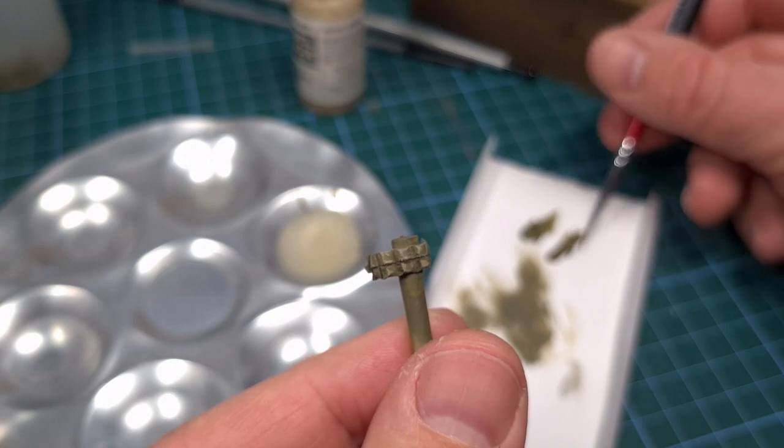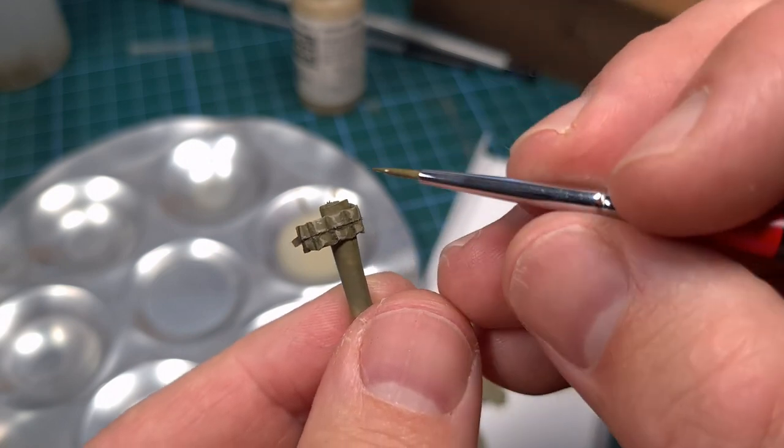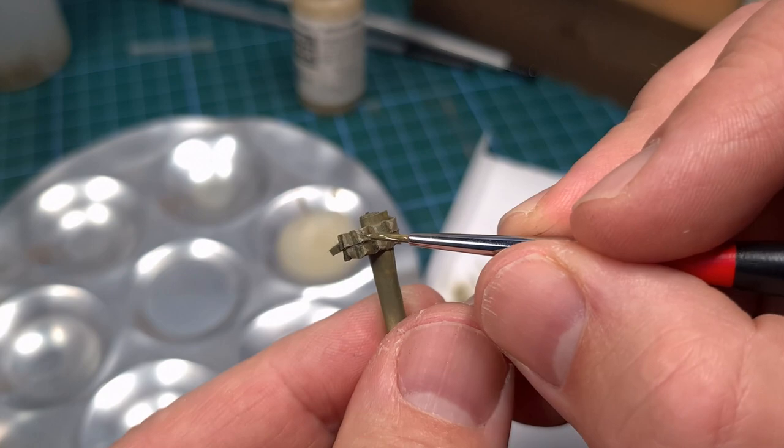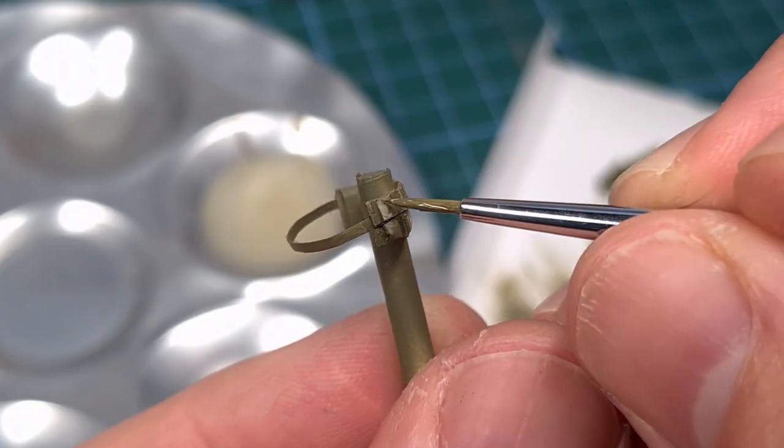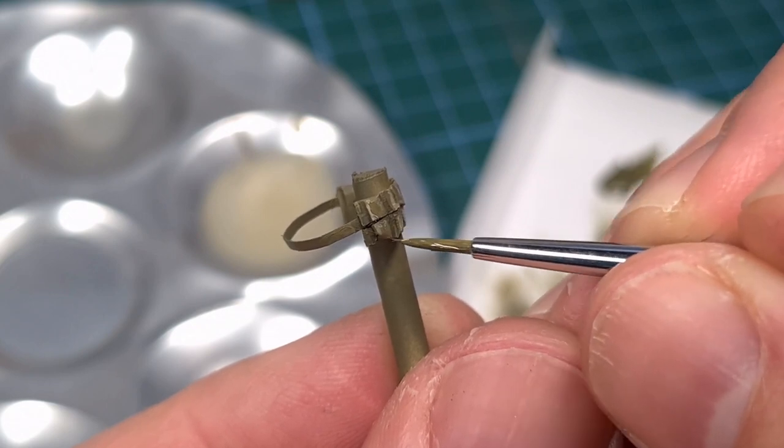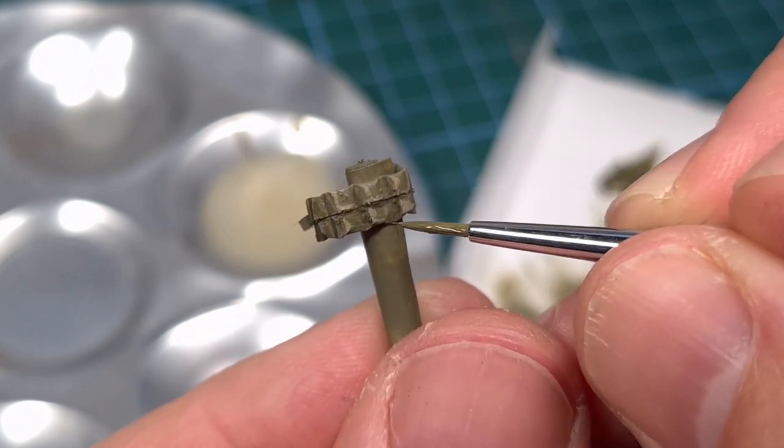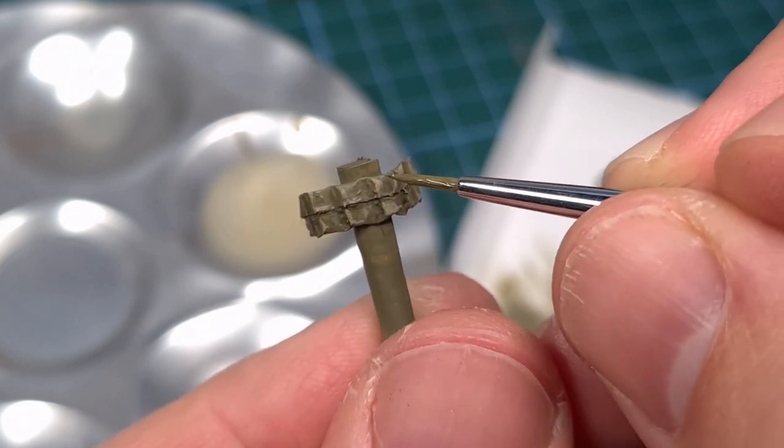I'm now back to the dark olive drab shade again. Just painting this into all the recessed areas, all the shadow areas, areas between the rifle magazines and also the openings of those individual pouches.